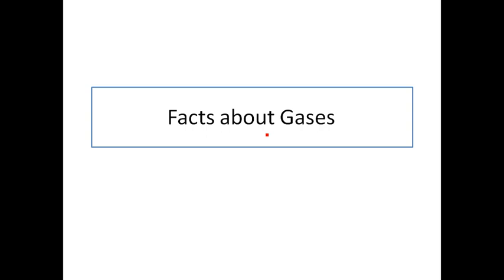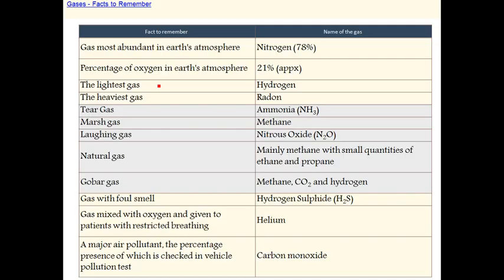An important question from previous papers: what is the gas most abundant in the Earth's atmosphere? This gas is nitrogen — nitrogen makes up 78% of the Earth's atmosphere. Most abundant in the Earth's atmosphere is nitrogen at 78%.